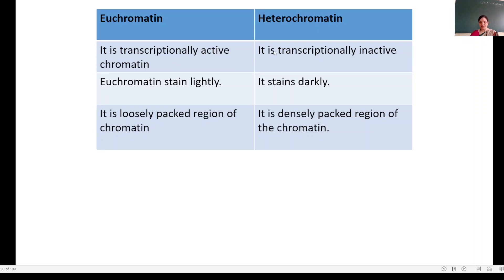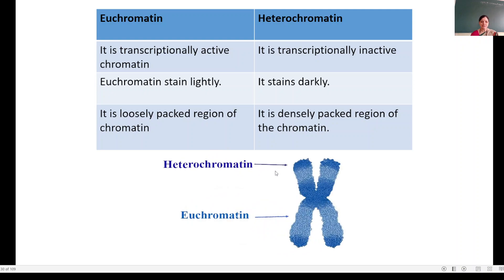Now see the difference between euchromatin and heterochromatin. Euchromatin is transcriptionally active chromatin; heterochromatin is transcriptionally inactive chromatin. Euchromatin stains lightly; heterochromatin stains darkly. Euchromatin is a loosely packed region of chromatin; heterochromatin is a densely packed region of chromatin. In this way, DNA packaging takes place in eukaryotic cells.